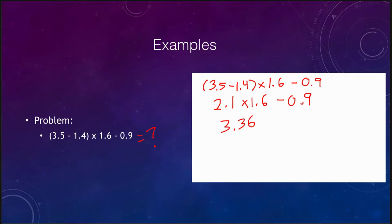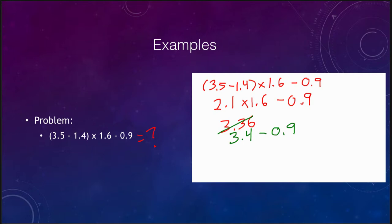Remember that we also want to look at significant figures. When multiplying or dividing, you can only use as many significant figures as the least precise value. Each of these numbers has two significant figures, so the answer would be 3.4. We then take that and subtract 0.9, giving a final answer of 2.5. It's also a good idea to always circle or clearly mark your final answer so that your professor is not searching through your work to find it.